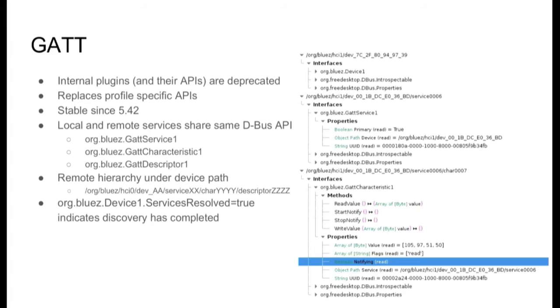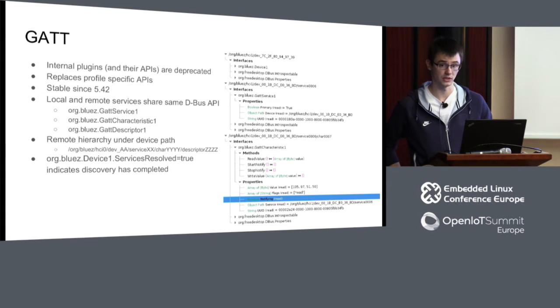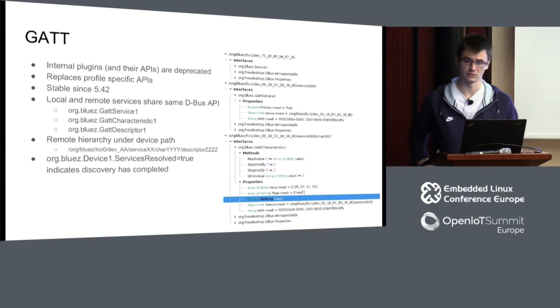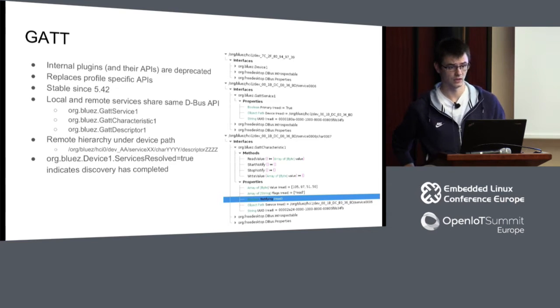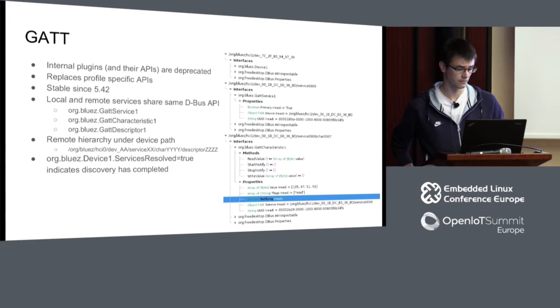Now that we've paired with a device, we want to run an application on top. So we need to use GATT. Internal plugins that were available before are now deprecated — things like the heart rate plugin, cycling speed, and a few others that provided custom APIs. You should now use the stable GATT D-Bus interface. If there will be changes, those will be in a backward-compatible manner. Local and remote services are represented with the same D-Bus APIs. We have three types of objects representing services, characteristics, and descriptors.